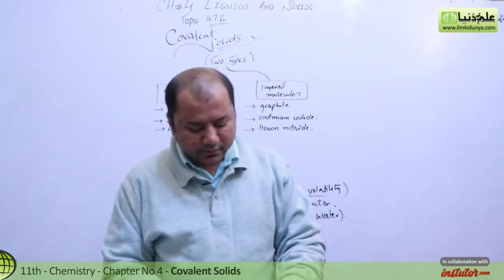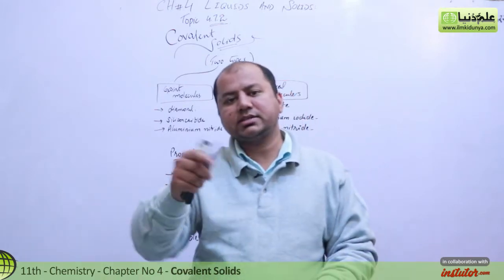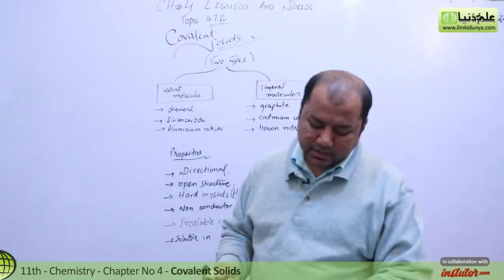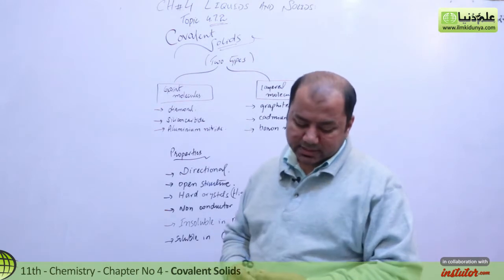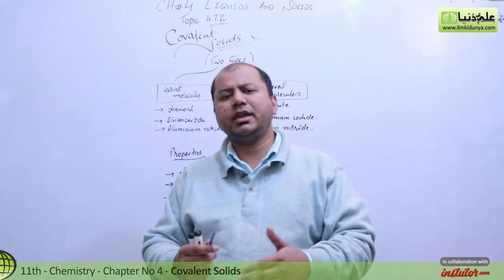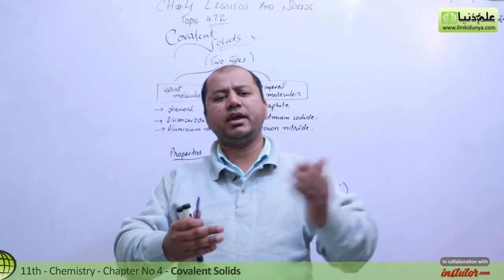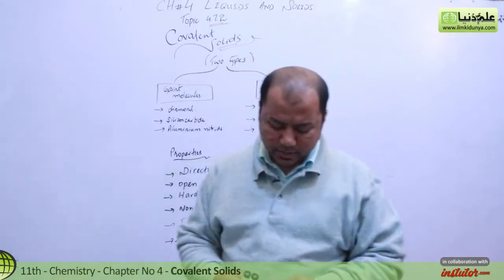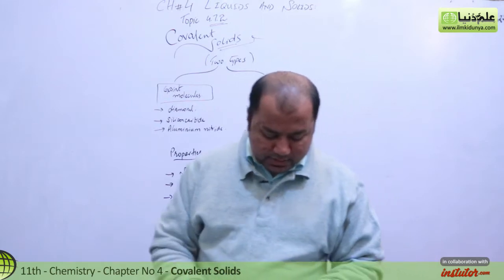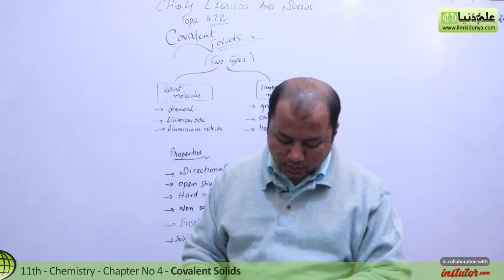The electrons available between the layers of graphite are delocalized, and conductivity becomes possible. These electrons are delocalized and can move between the layers, which is why graphite is a conductor.